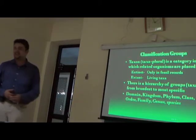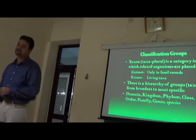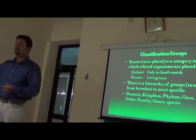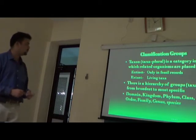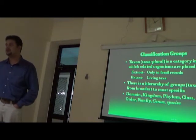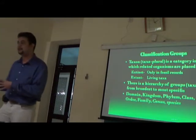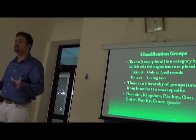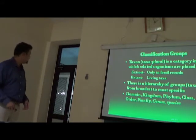Taxon — or taxa in plural — is a category for grouping organisms. It could be at genus, species, or higher taxonomic levels; there is a hierarchy of taxonomic ranks. Some taxa are extinct, such as most dinosaurs and the woolly mammoth, which is the closest relative of today's elephants. Extant means currently living taxa, while extinct means they have disappeared.